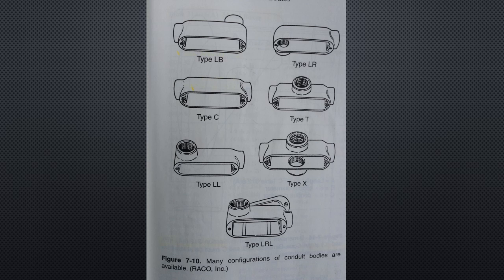The code points out that capped elbows, service entrance elbows, and similar fittings cannot contain splices, devices, or taps. Conduit bodies are subject to the same code rules as boxes with regards to filling, splicing, tapping, and device installation. Very few conduit bodies have adequate volume to accommodate splices, taps, or device installation unless they are oversized by two to three times the largest conduit entering the conduit body. Conduit bodies that are not marked with their capacity cannot contain splices, taps, or devices.